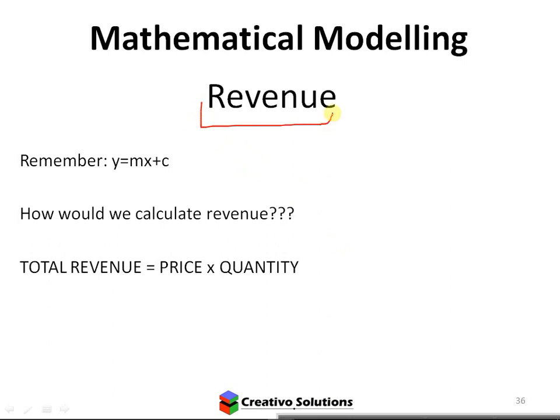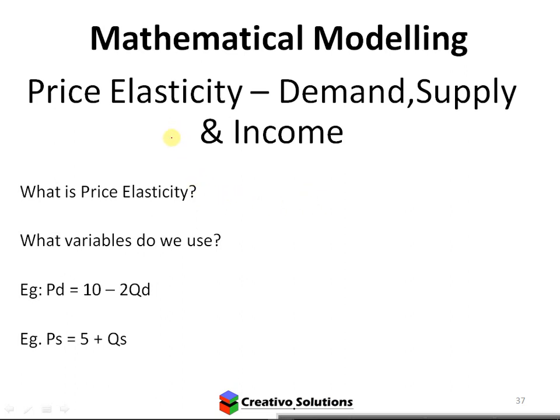Here's the note about revenue. How do I calculate revenue? Price times quantity gives me total revenue. And the next concept: elasticity of demand. What is price elasticity? Think about goods that are bought and sold. What does elasticity of demand represent in economics?